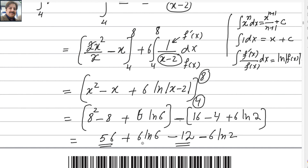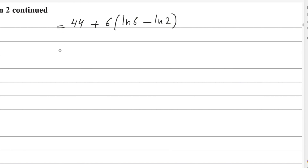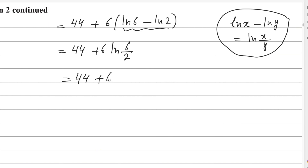Combining: 56 minus 12 is 44, and 6 is common between the log terms. So we write 44 plus 6 times the bracket log 6 minus log 2. Using the law of logarithms — log x minus log y equals log x over y — we simplify: log 6 minus log 2 equals log 3. Therefore the answer simplifies to 44 plus 6 log 3.